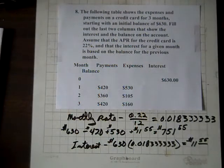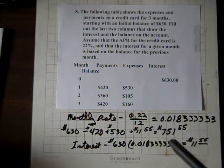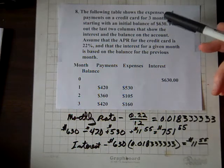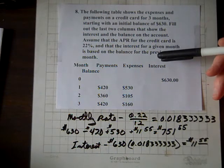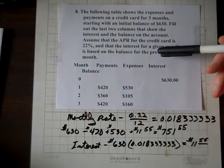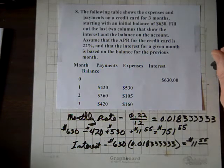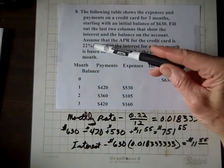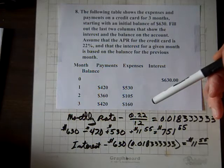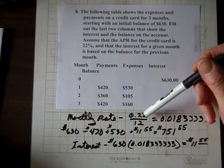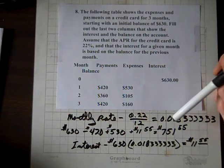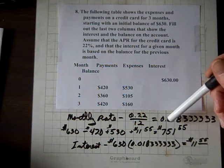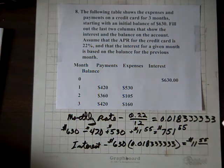Okay, for question eight on unit 4D, we've got credit card expenses for three months, and the initial balance is $630, and the annual interest rate is 22%. Well, we need to find the monthly rate, so we'll divide 0.22 by 12, and that gives us 0.0183 repeating.